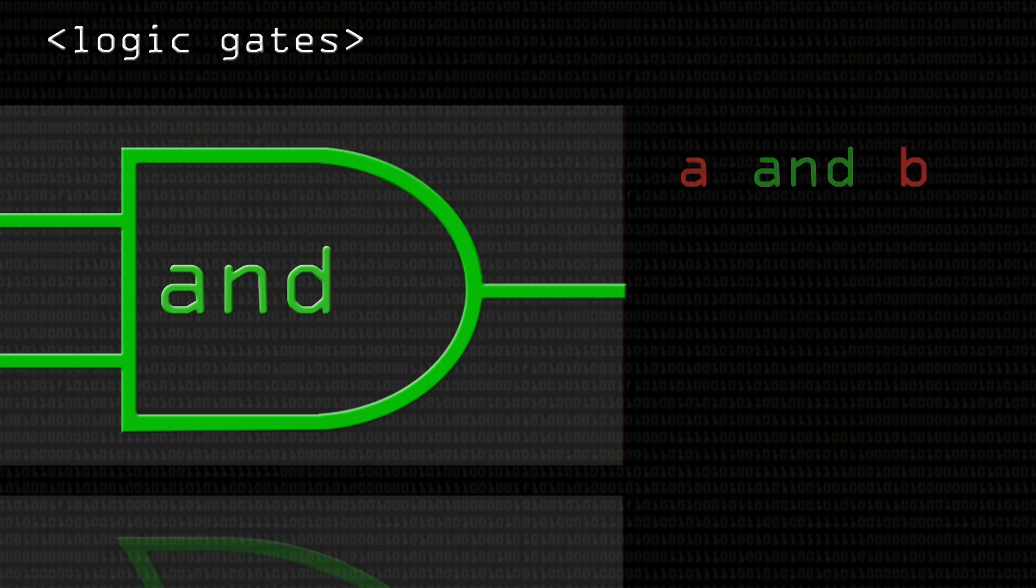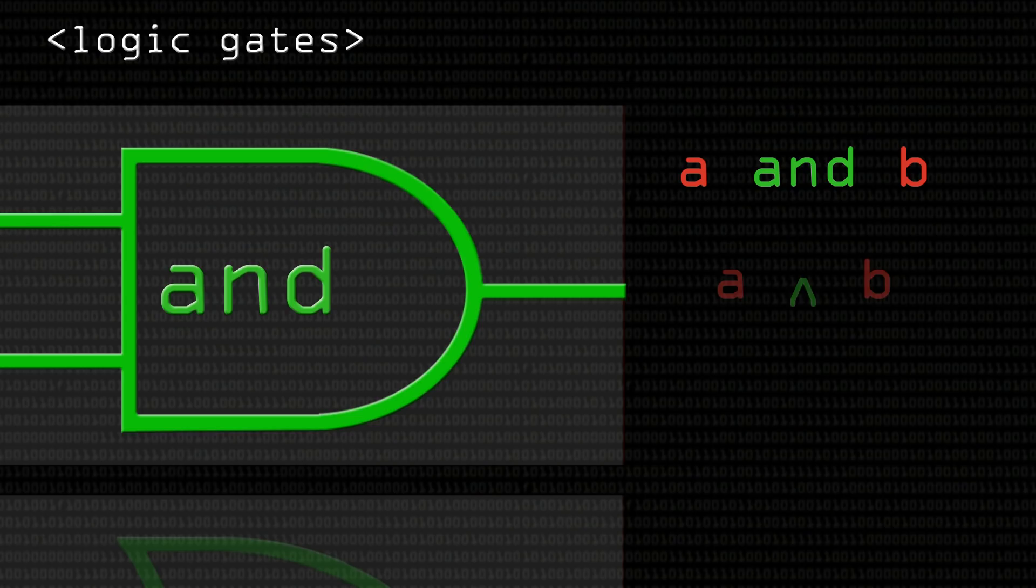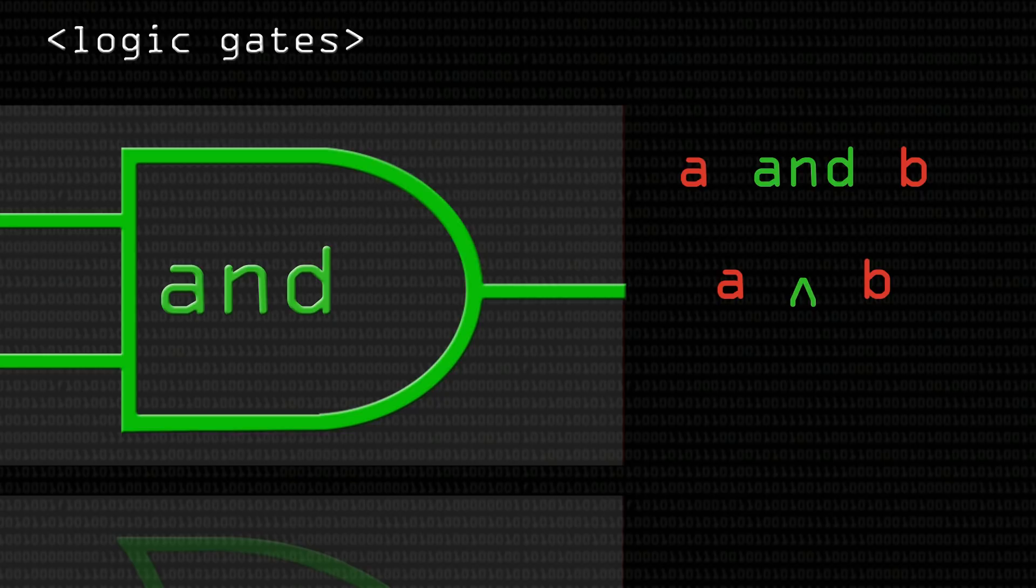You could write it as A AND B. Sometimes, if you look in logic textbooks, you'll find that they use a thing looking like a little spike down on the baseline, and that is the mathematical logician's favoured way of saying AND, but it's the same thing as writing A AND B.